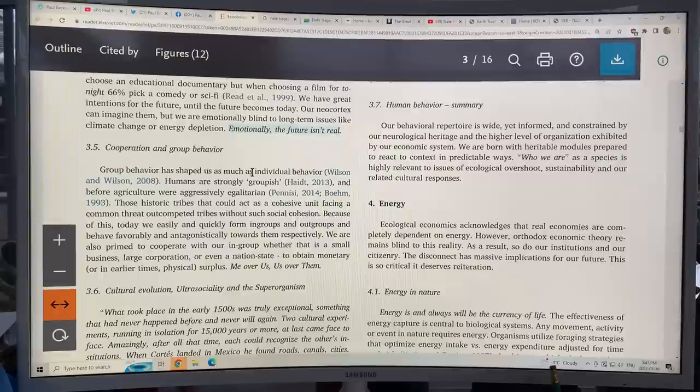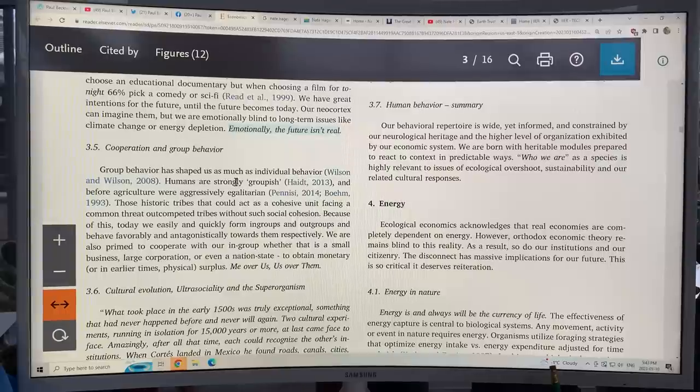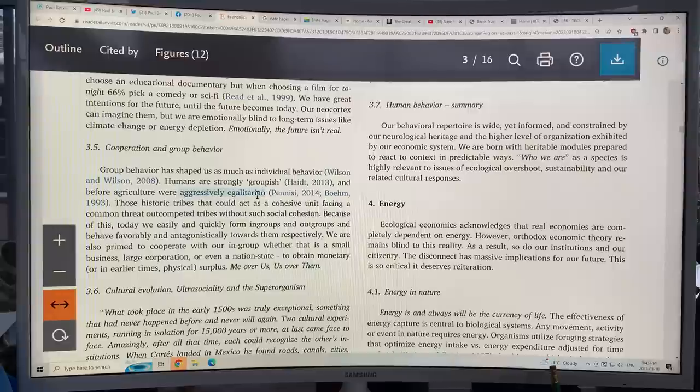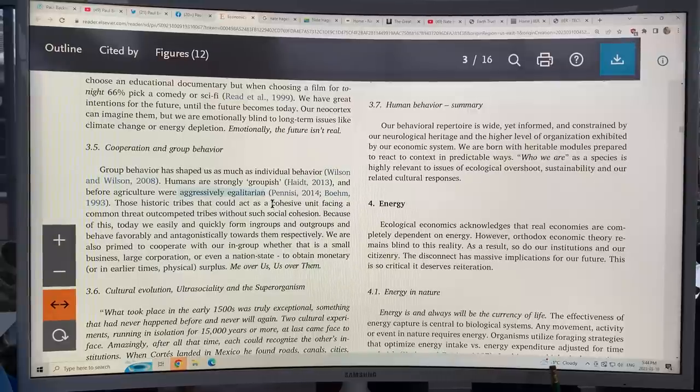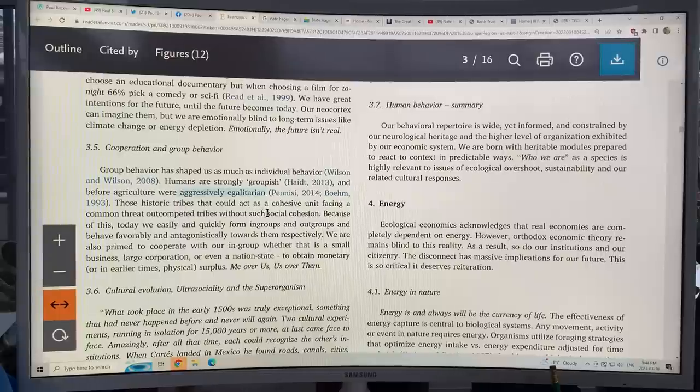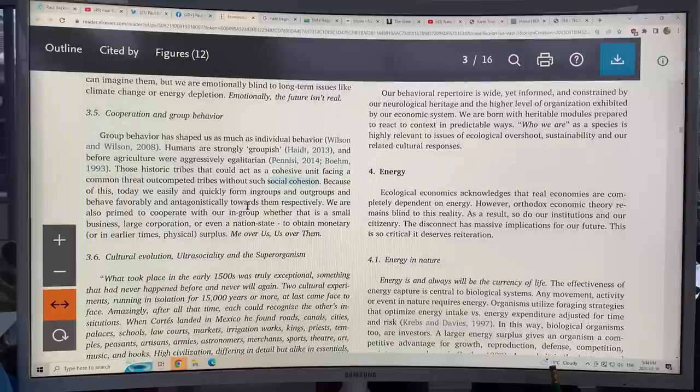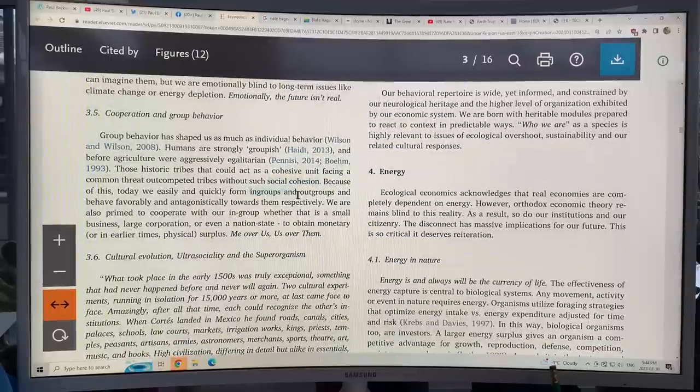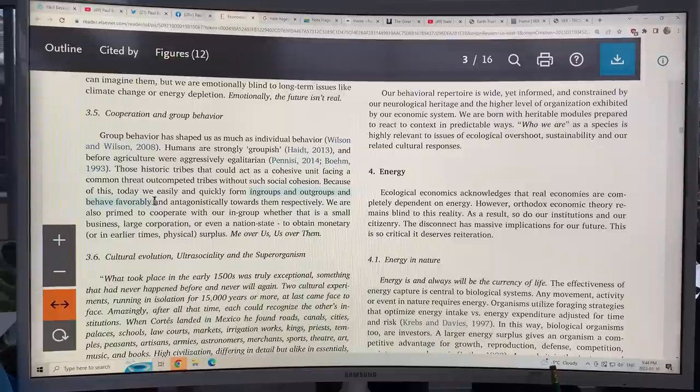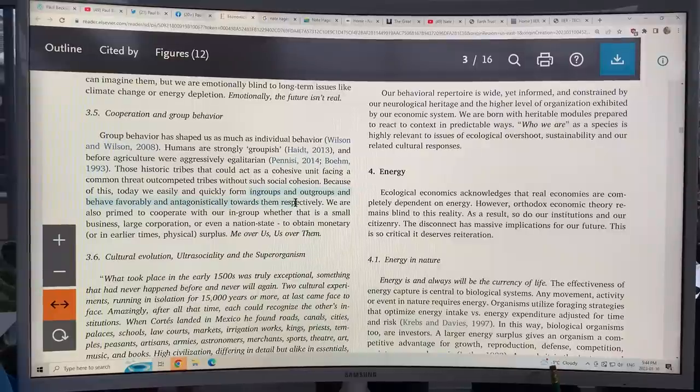Now, group behavior has shaped us as much as individual behavior. We're strongly groupish. And before agriculture, we were aggressively egalitarian, all equal, fair to each other. These historic tribes could act as a cohesive unit facing a common threat, out-competed tribes without the social cohesion. Thus, we form in-groups and out-groups. We behave favorably in the in-groups and antagonistically toward the out-groups.